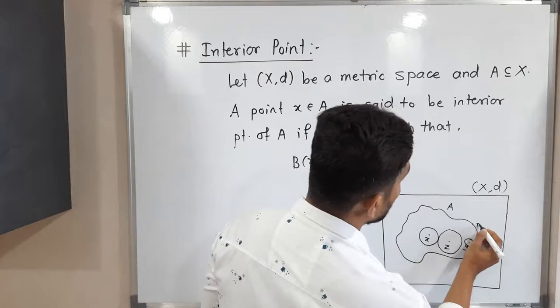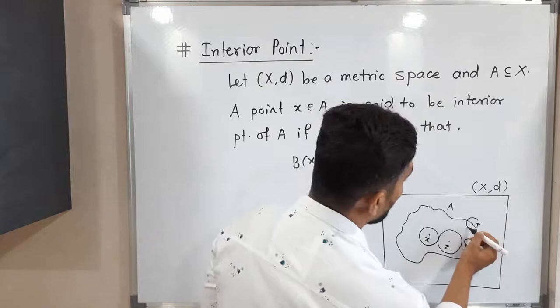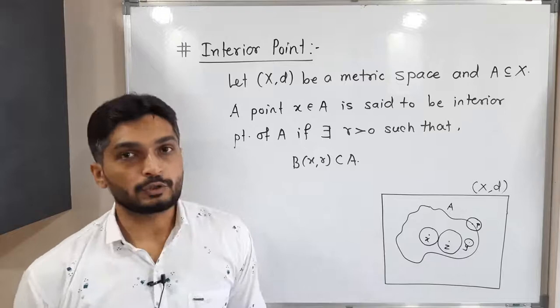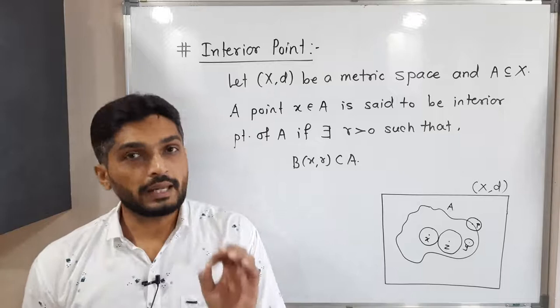And if you have any point like P, can we say it's an interior point of A? No. Since if you draw any ball around P, definitely some part of the ball will go outside set A. So P is not an interior point of set A, and all those other points are interior points of set A.